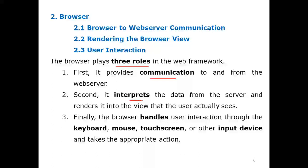The second role is interpretation — whether the username and password or options you have selected, all that computation needs to render the data. Data is interpreted from the server to display what the user actually wants to see. For example, entering correct credentials shows your inbox; incorrect credentials shows an error.